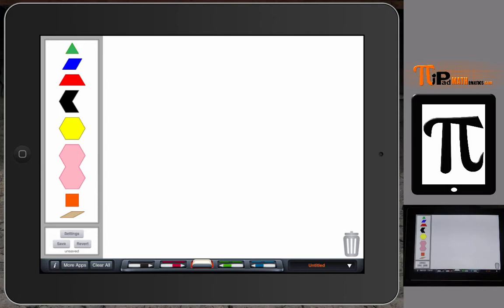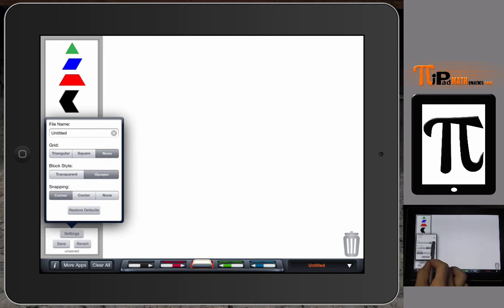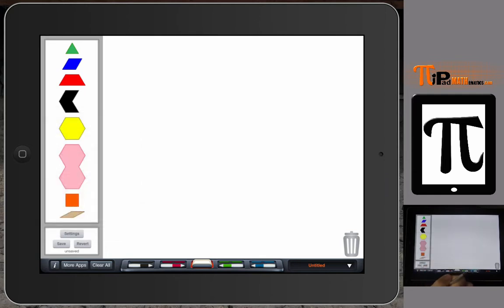This video is going to talk a little bit about pattern blocks themselves and how we can use them to model fractions. Now, this app I already have in the settings. I've changed the settings over to no grid in the background and opaque for the shapes and that they're snapping at the corners. This helps kind of build some of the ideas that are in this activity.